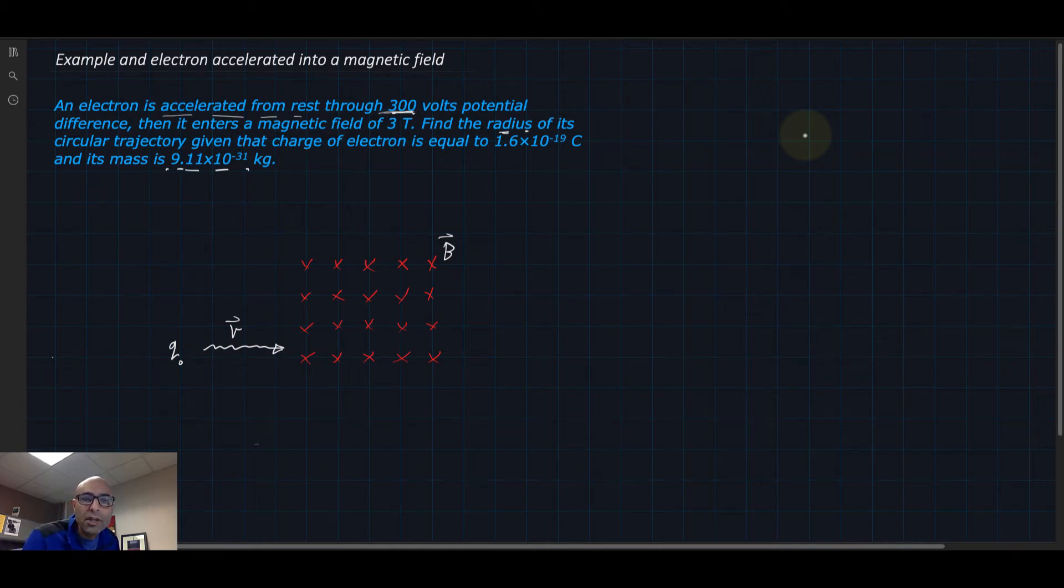Hello there everyone. Let's check out this example together. In this example, a charged particle—an electron—goes through the vicinity of a magnetic field. Because of that, it bends its trajectory into a circular motion, and we need to find the radius of this circular trajectory.